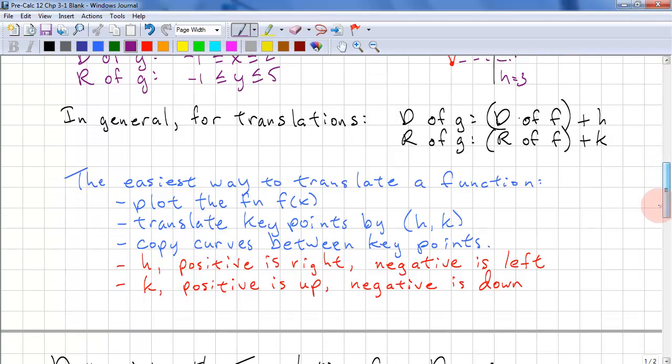Copy the curves between the key points. And again, if h is positive, we're moving right. If h is negative, we're moving left. If k is positive, we're moving up. And if k is negative, we're moving down.